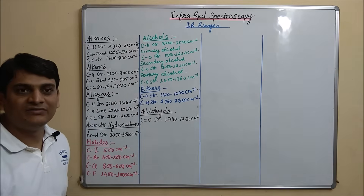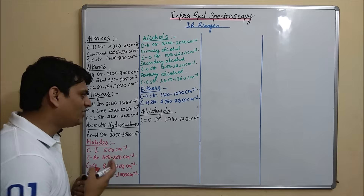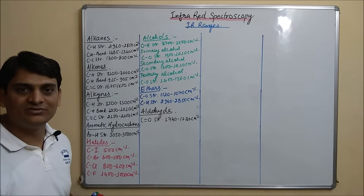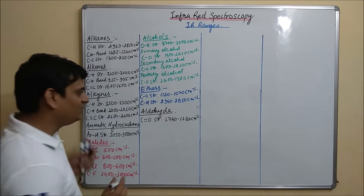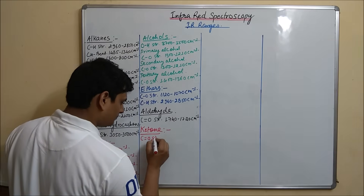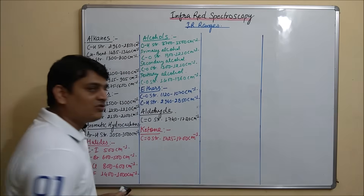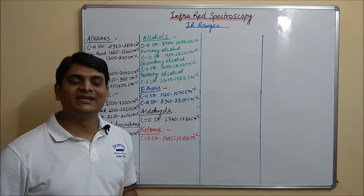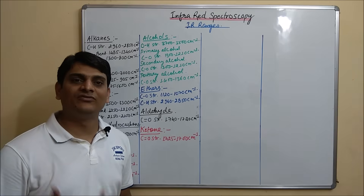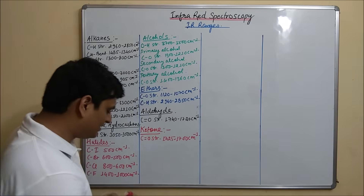Now coming to Ketone. For Ketone, C double bond O stretching is 1725 to 1700 cm inverse. Now coming to Carboxylic Acid. For Carboxylic Acid, C double bond O stretching is 1715 cm inverse.